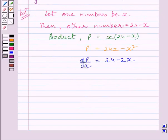We are given that the product of the two numbers is as large as possible. So for the product to be maximum, we put dp/dx = 0.